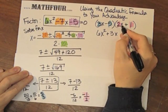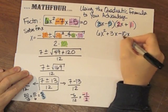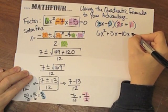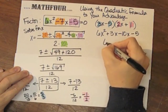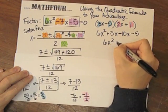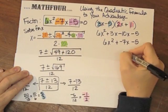Negative 5 times 2x is negative 10x. Looks good. And, then, negative 5 times 1 is negative 5. So, this is 6x squared, plus a negative 7x minus 5. Which is what I started with.